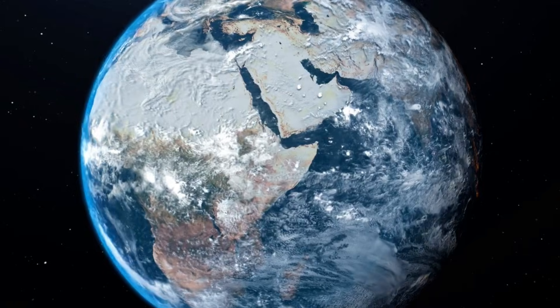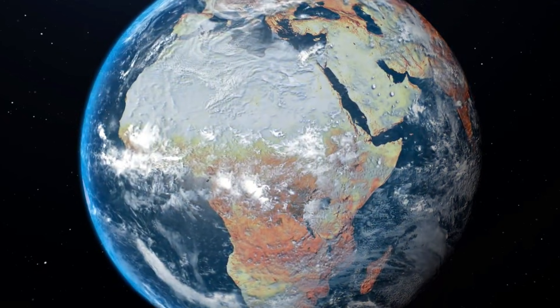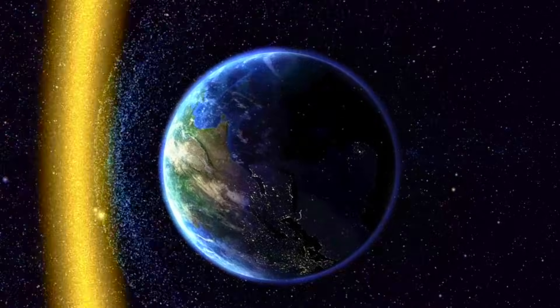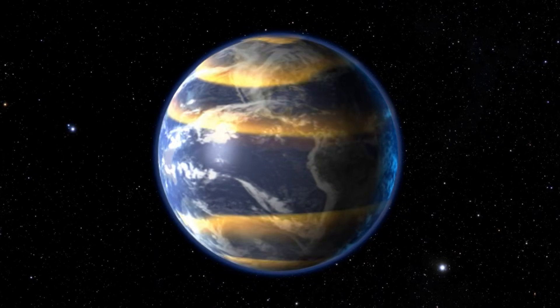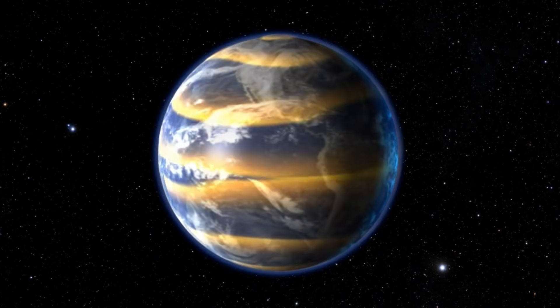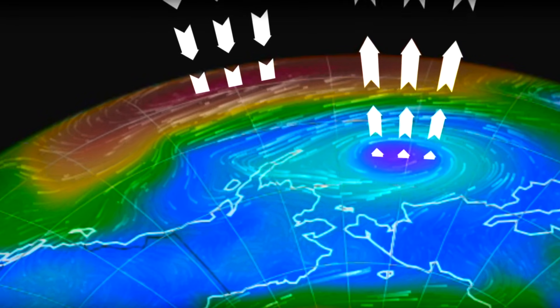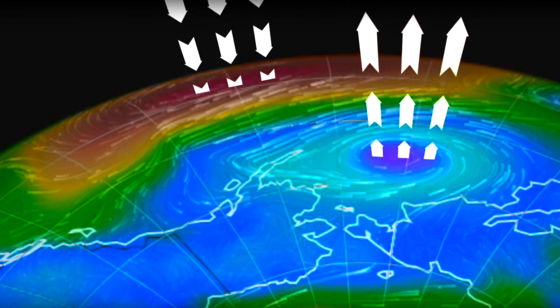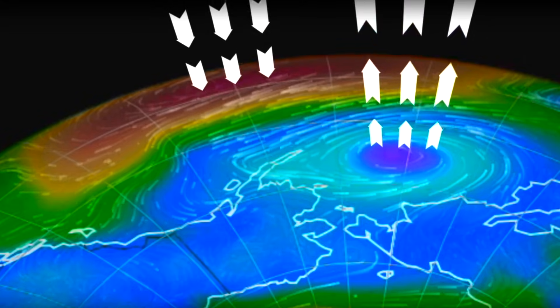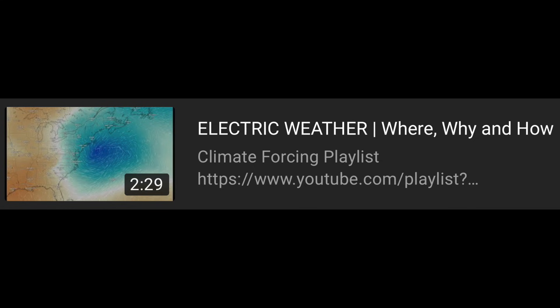But whether it is the solar flare juicing up the atmosphere, the solar wind pressure forcing Van Allen electrons downward, or the geomagnetic storm activity spreading across the globe, the global electric up-and-down circuit becomes excited. And as we discussed in a video just a few days ago, that electric circuit activity impacts the pressure cells, wind, clouds, and more.